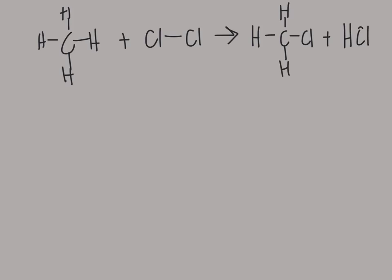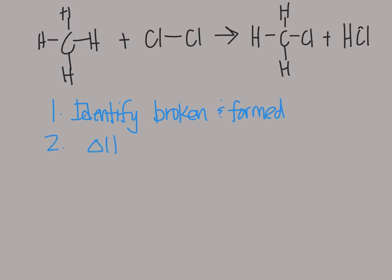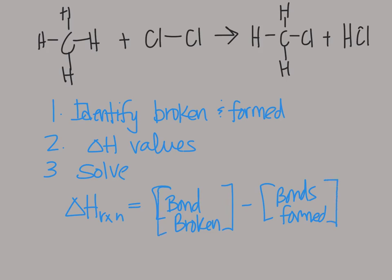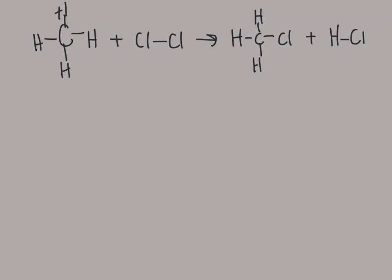To solve the bond enthalpy for a reaction, you need to identify what is broken and what is formed — that would be left to right across the arrow. You need to look up the delta H values and then solve. You are going to find the delta H for this reaction by considering the bonds broken minus all the bonds formed. We need the sum of all the broken and the sum of all the formed, and that would be the delta H for the entire reaction. So we look at the yield sign as our dividing line and figure out what's different on each side.